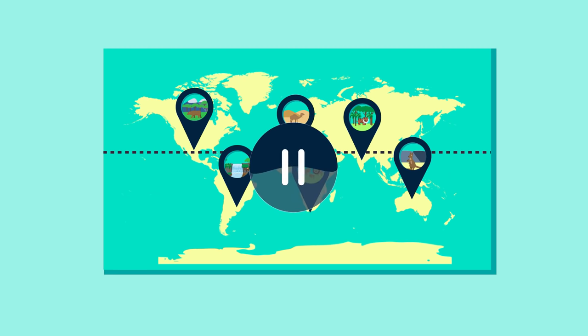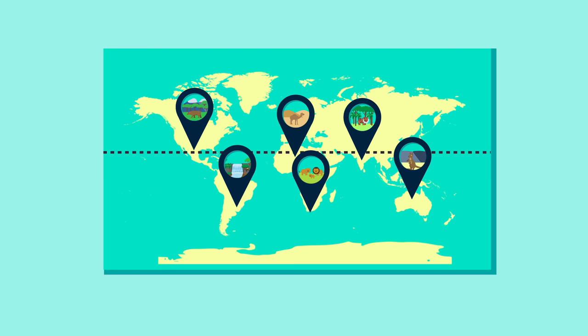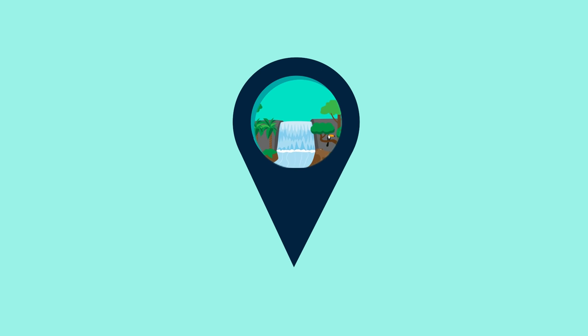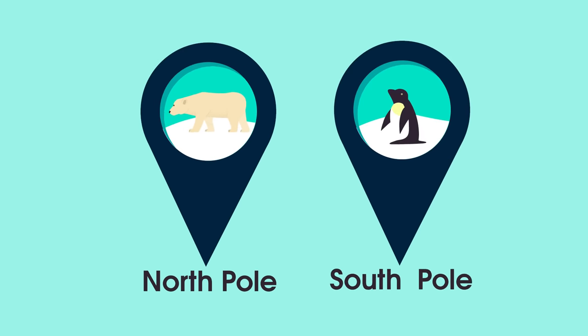Pause the video and have a think. Habitats at the equator, such as tropical rainforests, usually have the highest biodiversity. So if you thought habitats at the north or south poles, such as the polar desert, you're correct.